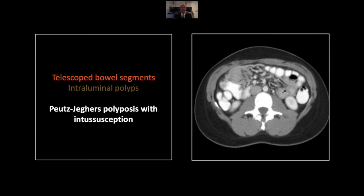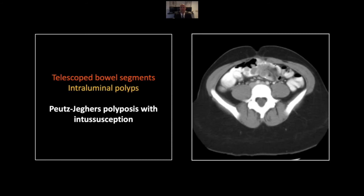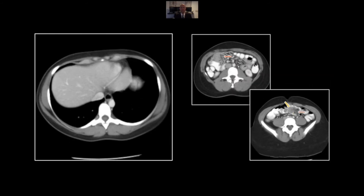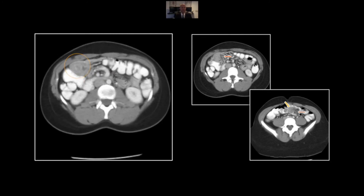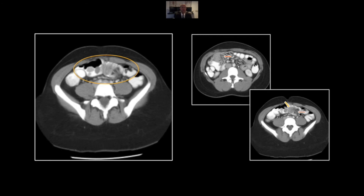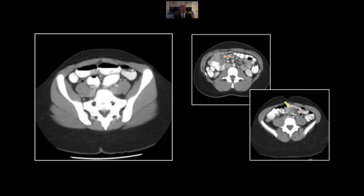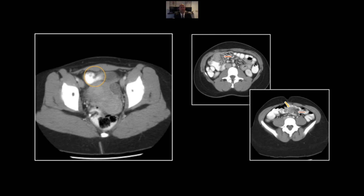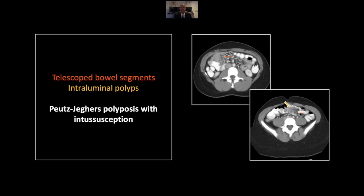In this additional case, you can see multiple telescoped bowel segments, typically with associated polyps, all throughout the abdomen. Here is the largest one with an intussusception and essentially a stalk coated with polyps. On the coronal, note again multiple loops of telescoping usually associated with polyps, and here is the big one — you see a big telescoped segment coated with polyps on its downstream aspect. There are even a few polyps to be seen in the more distal small bowel. That is a case of Peutz-Jeghers polyposis with intussusception.